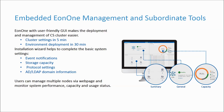InfoTrend specially designed Eon1 Embedded Management Software for EonStore CS. It provides two subordinate configuration tools so that users without a technical background can easily complete the cluster setting in 5 minutes through a user-friendly graphical interface. It takes only 30 minutes to complete the full environment configuration. After completing the deployment, the installation wizard will also guide the user to complete basic settings such as event notification settings, storage-based configuration, communication protocol settings, and adding AD LDAP domain information. Users can then manage multiple nodes through the webpage and monitor system performance, capacity, and usage status at any time.